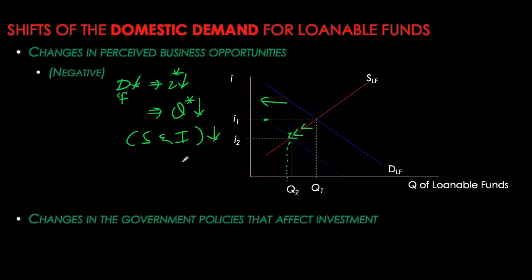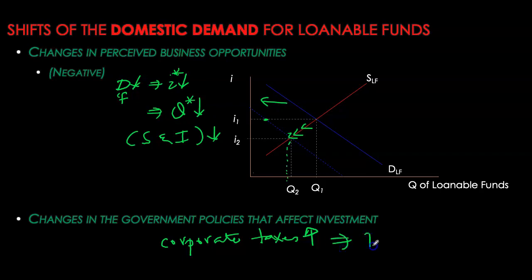The second demand shifter is changes in government policies that affect investment. If businesses must give a larger share of revenues to the government in the form of taxes, this will again decrease demand for loanable funds — businesses are discouraged from pursuing investment opportunities. With lower demand, interest rate is pushed down, quantity supplied decreases in response, and overall both equilibrium interest rate and quantity of funds exchanged fall.